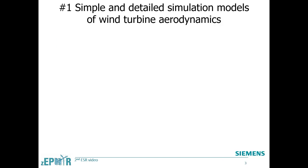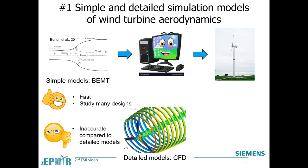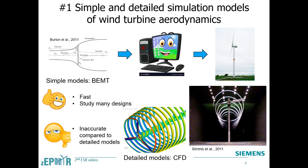Let's talk about the first topic. Engineers use simple aerodynamic models, BEMT, in computer simulations to design wind turbines. These simple models allow simulations to be very fast, so that engineers can study many possible designs. Their limitation is that they are inaccurate compared with detailed models, CFD, even under ideal wind conditions. This is because of the tip vortex, which is a complex phenomenon.